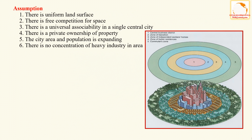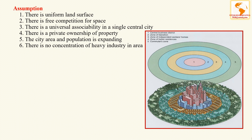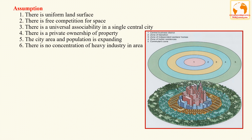An assumption is a theme accepted as true or certain to happen without proof. The assumptions are: first, there is a uniform land surface like a plain plateau; second, there is free competition for space; third, there is universal accessibility in a single central city; fourth, there is private ownership of property; and fifth, the city area and population is expanding, with no concentration of heavy industries.